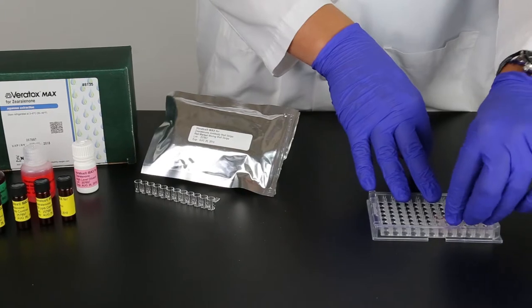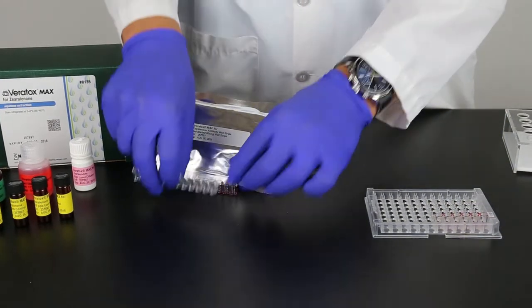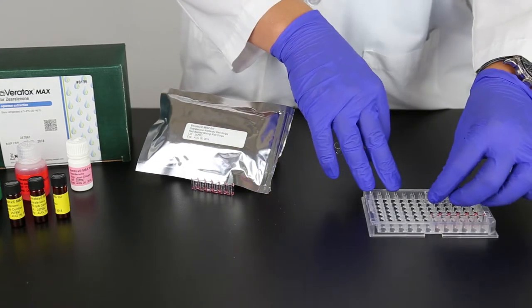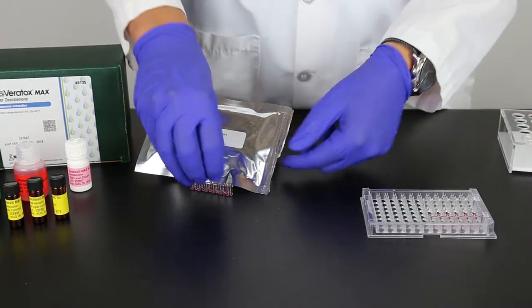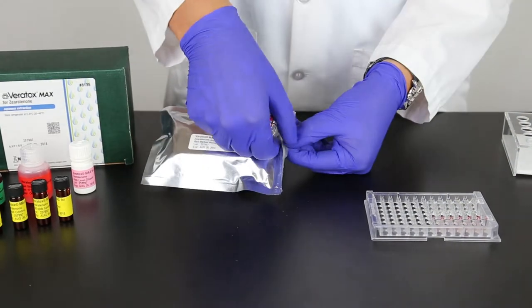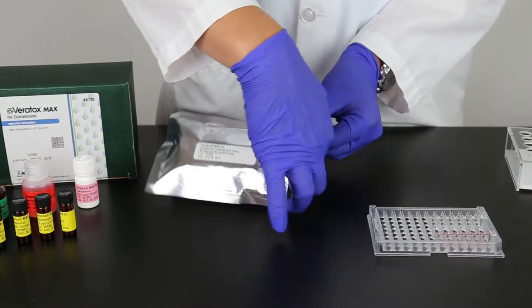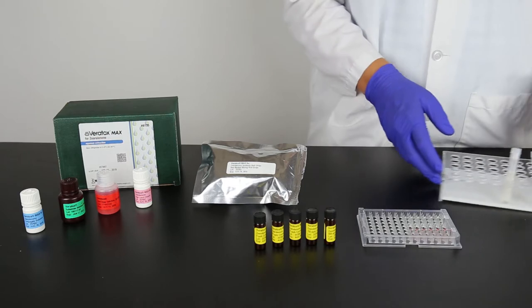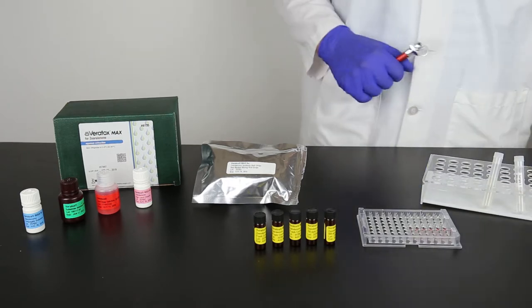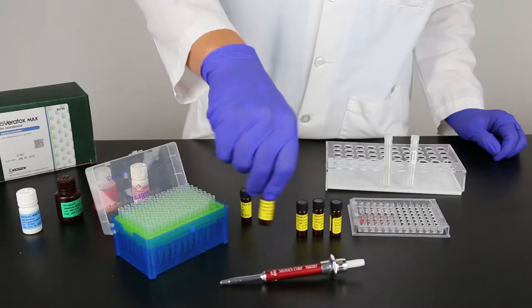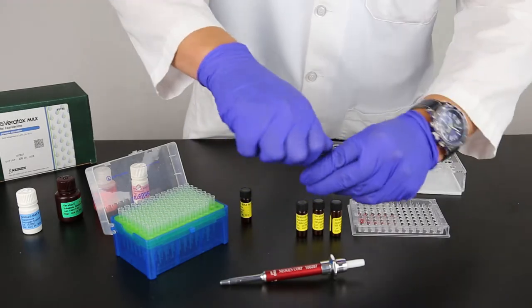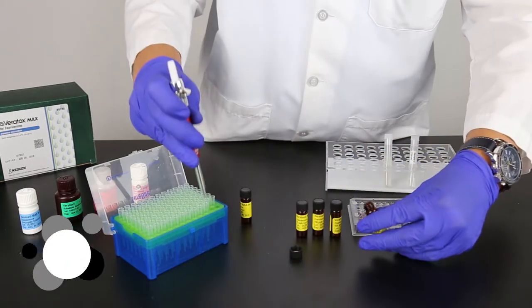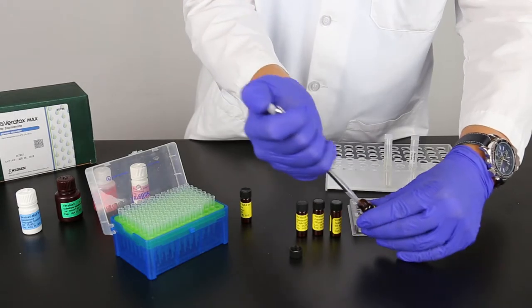Remove one red marked mixing well for each sample to be tested plus five red marked mixing wells for the controls. Remove an equal number of clear antibody coated wells and place both strips in the well holder. Put the controls in order from the lowest to the highest concentrations. Gently swirl prior to use. Using a new tip each time, place 100 microliters of the controls and samples into the appropriate wells.